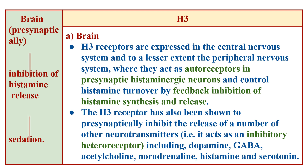H3 receptors in the brain presynaptically inhibit histamine release and cause sedation. They are expressed in the CNS and, to a lesser extent, in the peripheral nervous system. In the CNS they act as autoreceptors in presynaptic histaminergic neurons, controlling histamine turnover through feedback inhibition of synthesis and release. H3 receptors also presynaptically inhibit release of dopamine, GABA, acetylcholine, noradrenaline, histamine, and serotonin, acting as inhibitory heteroreceptors, thereby inducing sleep.